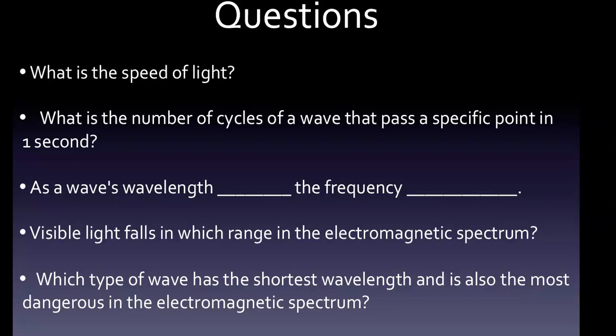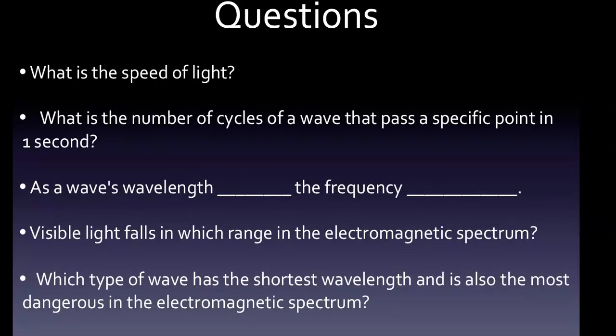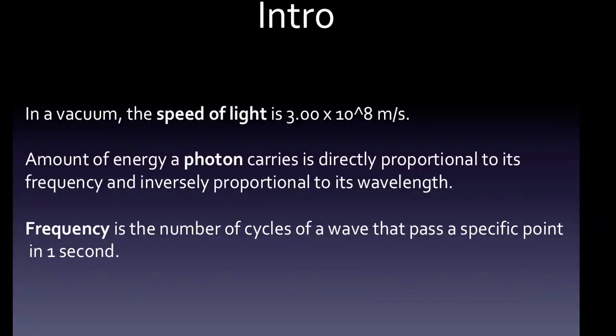Okay, so in a vacuum, the speed of light is three times ten to the eight meters per second. Right off the bat, what is the speed of light? Our very first question, we go ahead and answer that one. Photons carry energy, and the amount of energy a photon carries is directly proportional to its frequency and inversely proportional to its wavelength. That's an important one to know as well.